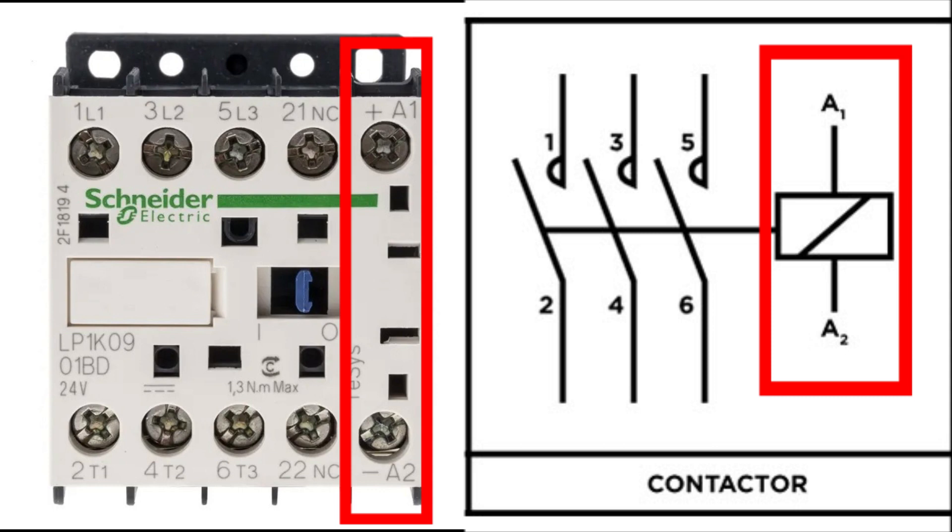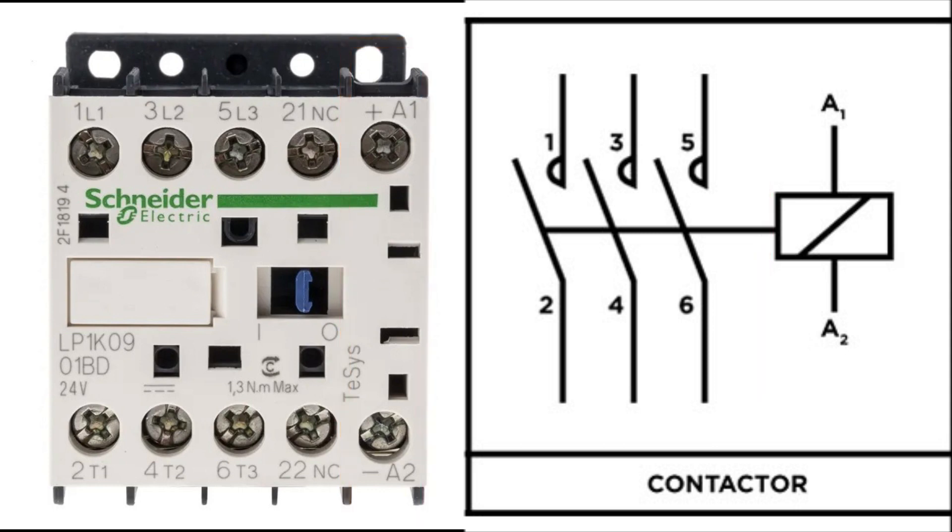These two terminals are the ones that will make the coil trigger. The coil voltage can range all from 24 voltage DC up to 230 voltage AC. The contactor will have the information written on it. The contactors I will use in this video are 24 voltage DC.